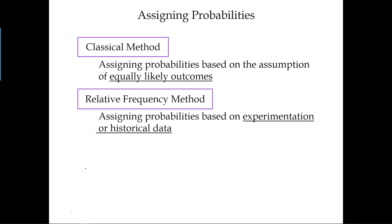Now let's look at the second method: the relative frequency method. This is different from the classical method because the classical method relies on assumption. The relative frequency method relies on experimentation or historical data. We identify possible outcomes for an experiment, perform the experiment multiple times, and then create a relative frequency distribution.